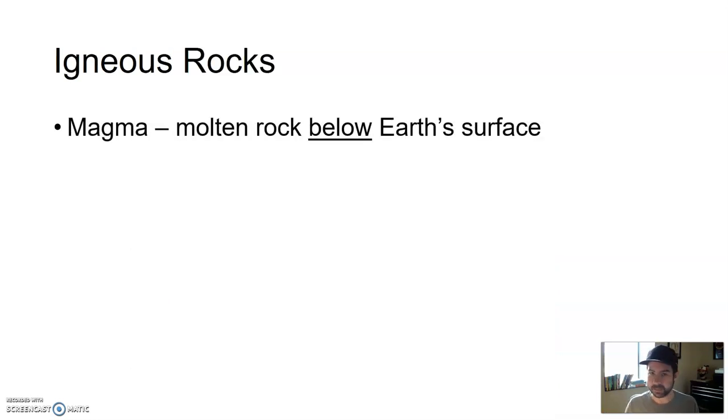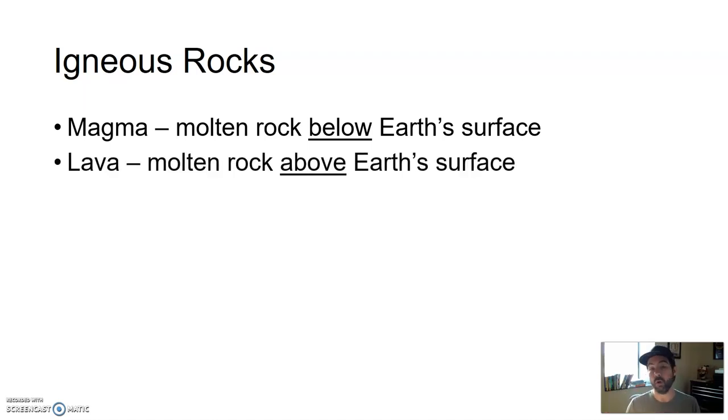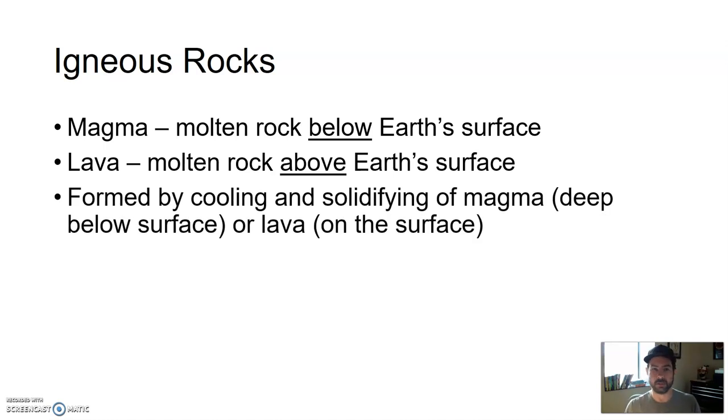As mentioned, igneous rocks. Igneous rocks are formed from cooled magma, which is molten rock below Earth's surface. And if it cools below Earth's surface, it's known as an intrusive igneous rock. It's cooled and formed inside the Earth. Or, when molten rock makes its way to the surface, it's called lava. Two different names for the same exact thing, just depending on where it's at. But if lava cools at the surface, then it cools really quickly. And these are known as extrusive igneous rocks.